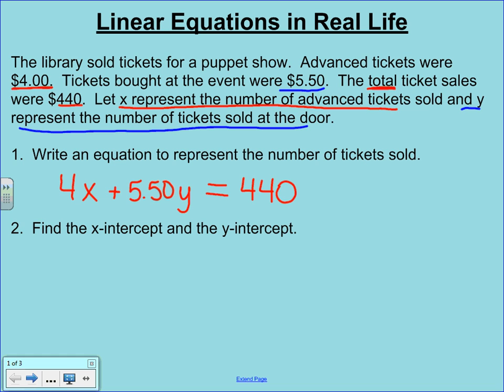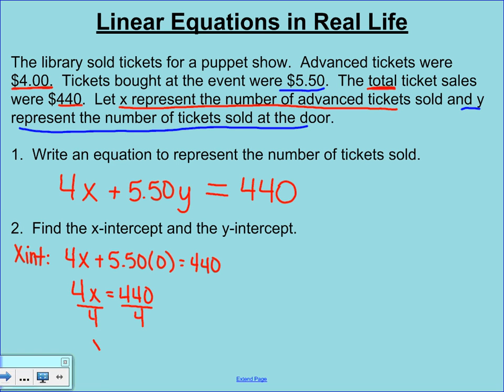The next task is to find the X-intercept and the Y-intercept. And you may recall from the last video, this is a pretty simple process. We just have to plug in our zeros. If we're going to find the X-intercept, we plug in our zero for Y. That essentially drops the Y-term out. So we're left with the equation 4X equals 440. Divide both sides by 4. And X is 110. Now next to this, you can write (110, 0), because remember the X-intercept is always a point.